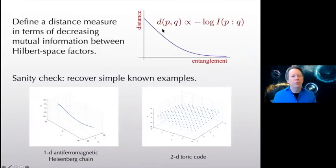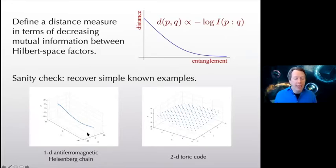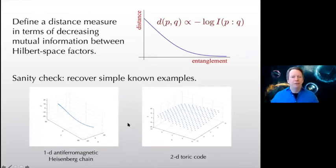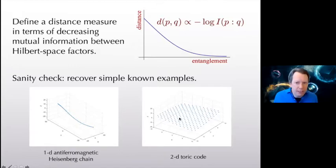Our ansatz is that the metric distance between two regions is proportional to minus the log of their mutual information: high entanglement means small distance, low entanglement means large distance. We tested this by starting from known entanglement structures — one-dimensional and two-dimensional systems — forgetting the geometry and asking whether applied math techniques recover the correct dimensionality. The answer is yes: starting from the mutual information data and fitting a best classical geometry correctly recovers one-dimensional versus two-dimensional space.